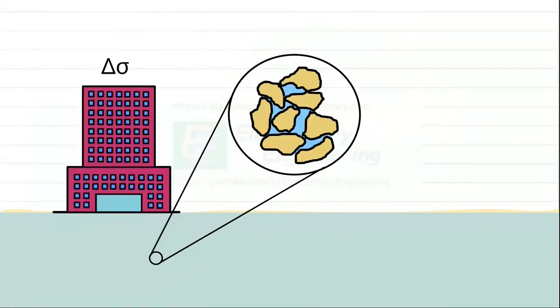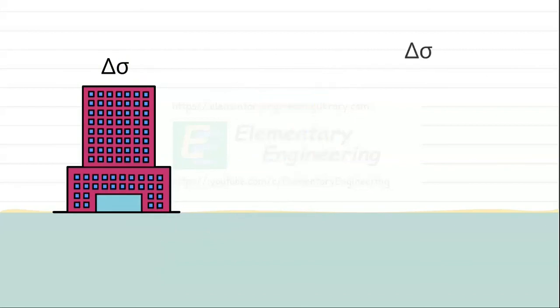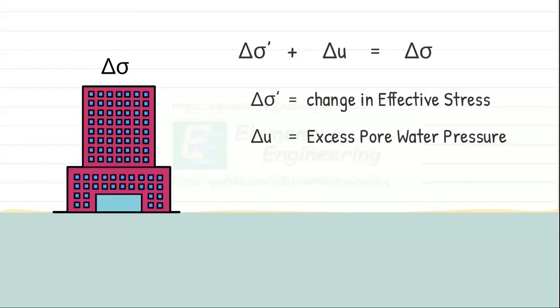Generally, a load or pressure increment, delta sigma, applied to the saturated soil is shared by both solid particles and water. We can write total stress applied as sum of pressure supported by soil as effective stress acting on particles and pressure supported by water as pore water pressure. Delta sigma dash is change in effective stress, delta U is change in pore water pressure, and delta sigma is change in total stress.